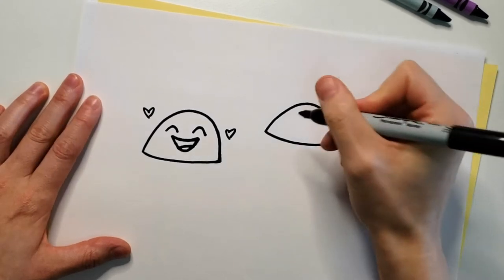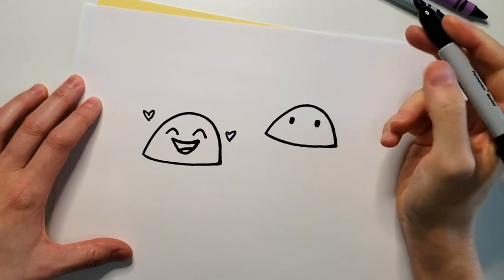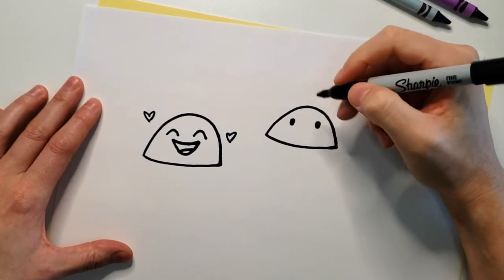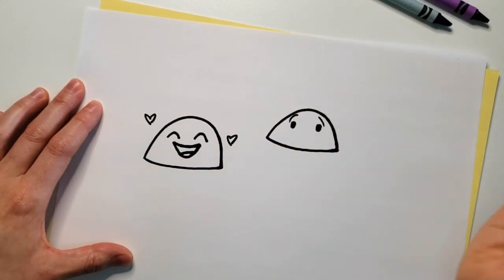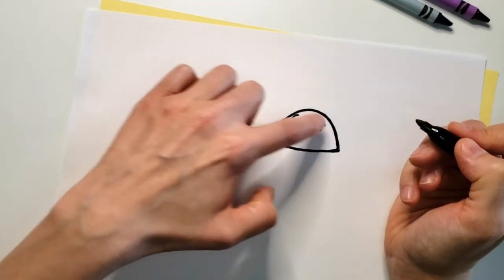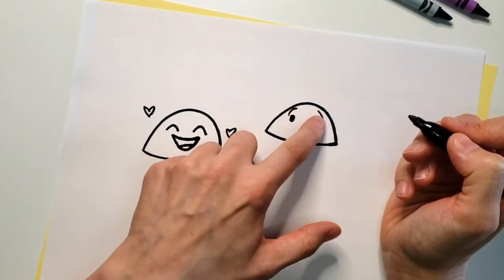And now maybe we can give Bon Bon's eyes like this and maybe we can make Bon Bon look a little excited. So let's put some eyebrows like that, which are two little lines like this. You can change a lot about an expression by the way you place the eyebrows.